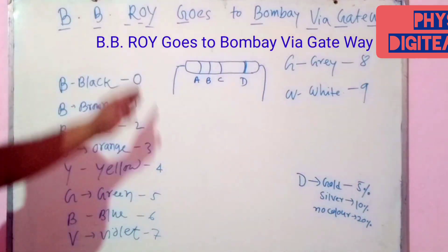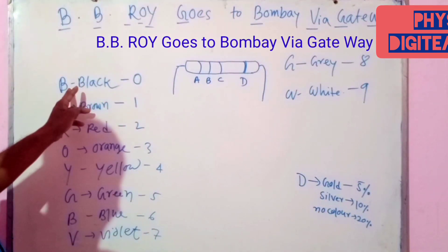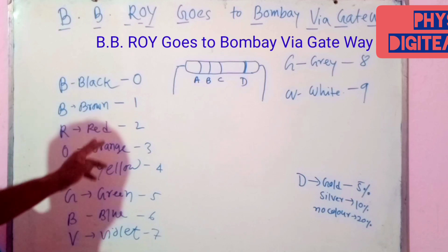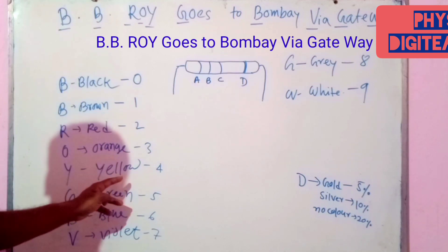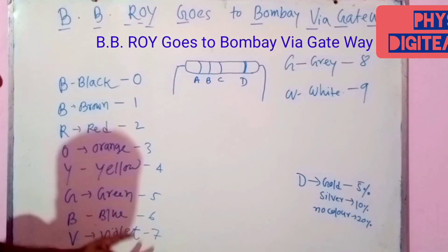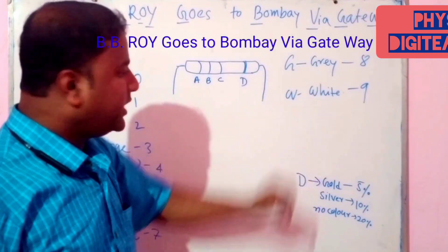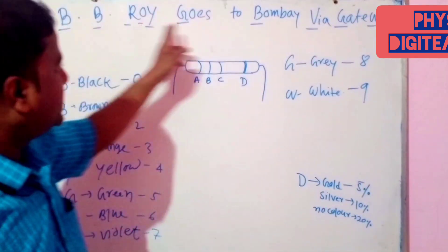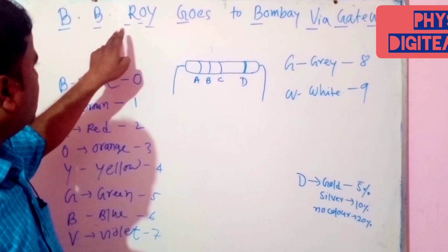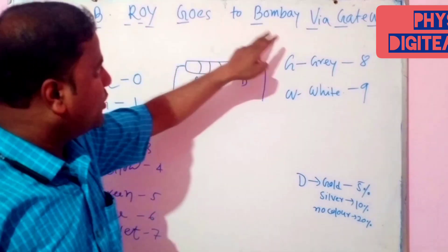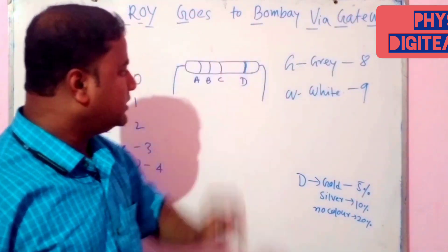These are some code numbers of B for black, brown, red, orange, yellow, green, blue, violet, grey, white. We memorize this sentence, B.B. Roy goes to Bombay via gateway.